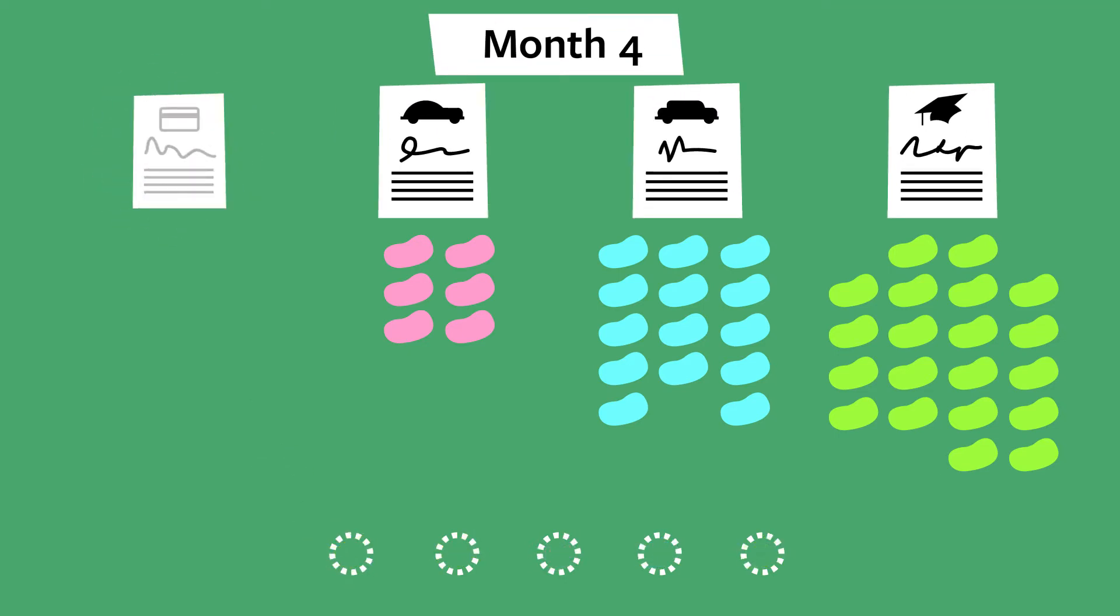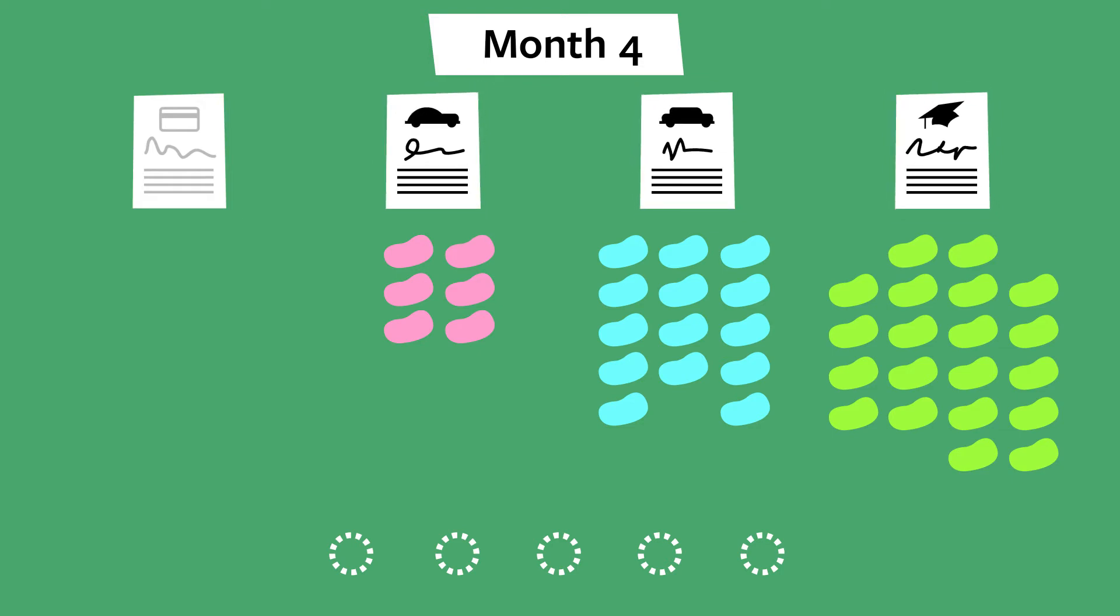For the fourth month, they only have three loans left to pay on, which means they can put even more cash towards Jen's car loan. After they've removed one bean from each pile, they take two extra beans from the pile. Yum!